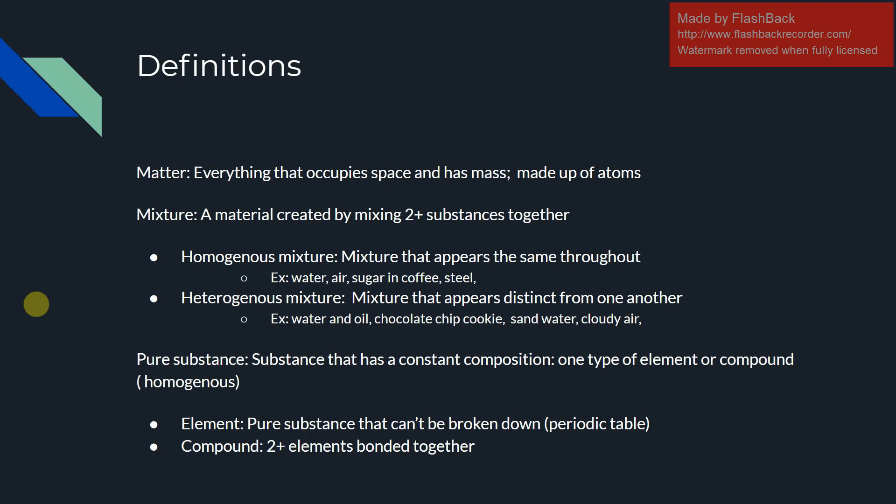Going off of homogeneous mixtures, a pure substance is a substance that has a constant composition — there's only one type of element or compound present throughout. This is also homogeneous; they go hand in hand. With pure substances, you're looking at elements, which are pure substances that cannot be broken down anymore — all the atoms on the periodic table are elements. Compounds are two or more elements joined together, such as water, sugar, and glucose.